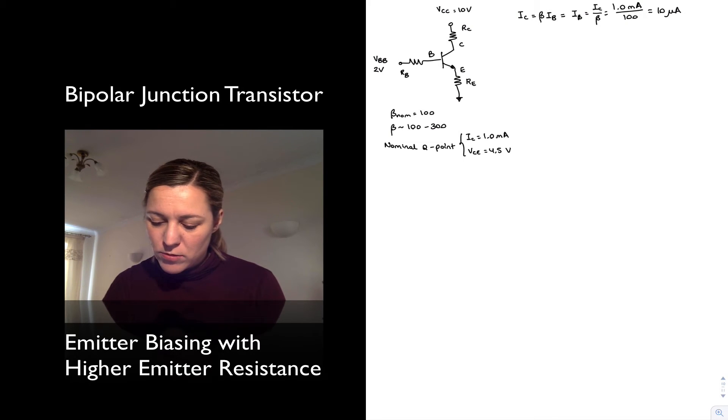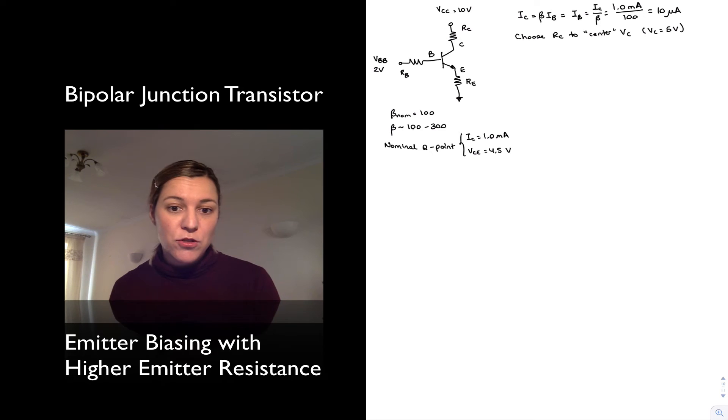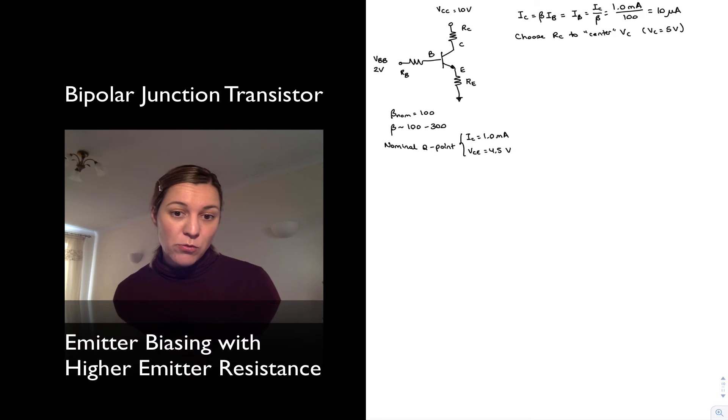We still want to center the voltage at the collector, so I choose RC to center VC. VC equals 5 volts, centered with respect to the two supplies - in this case VCC and the supply that's connected to the emitter terminal, which in this case is ground. So that gives us 5 volts.